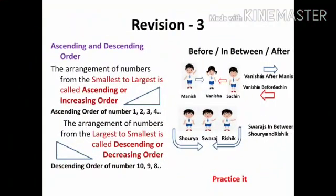In another revision, we are going to see ascending and descending order. Please understand, the arrangement of numbers from the smallest to largest is called ascending order or increasing order. For example, ascending order of numbers 1, 2, 3, 4 means small to big.